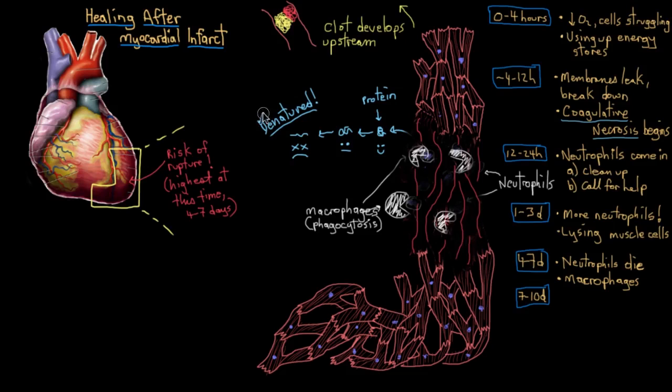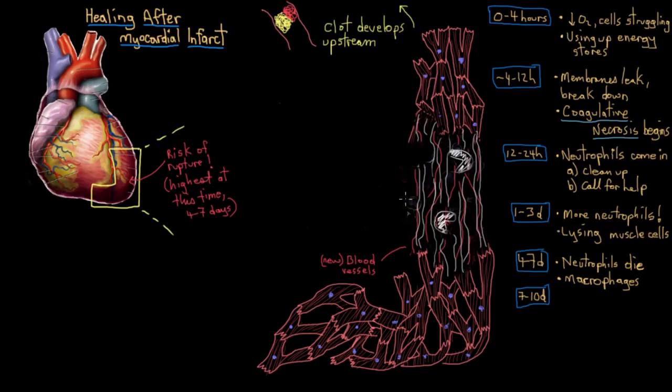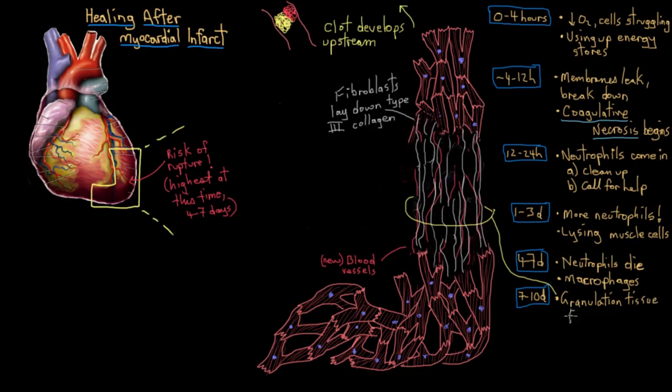So now that there's an oxygen source in place, we can start to think about laying down a sort of scaffold for rebuilding this wall again. So we actually do get that. We get these cells called fibroblasts, laying down these thin, sort of spindly strands of structural protein called type III collagen. So all of this, these new little blood vessels and this new collagen, is collectively called granulation tissue.